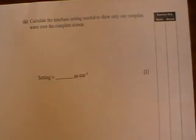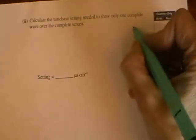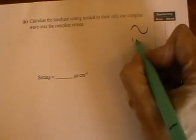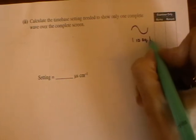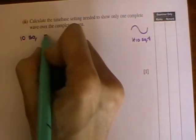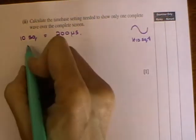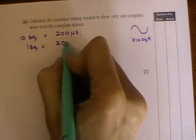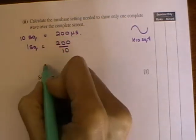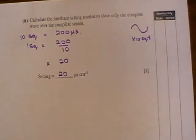Last part of the question: Calculate the time base setting needed to show only one complete waveform over the complete screen. So we want that one wave to be worth 10 squares. And we know that the time period of those 10 squares is 200 microseconds. So we want 10 squares to be equal to 200 microseconds. Therefore one square must be equal to 200 over 10, and that gives you 20 microseconds per centimeter.